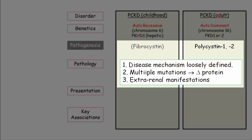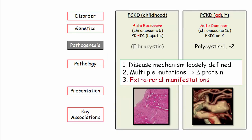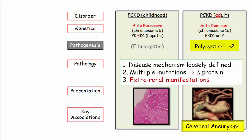There is not one mutation that leads to defective protein production — in fact there are hundreds, which account for varying phenotypic presentations, particularly relevant in the childhood form. It is conceptually important to realize these proteins are found in tissues beyond the kidney. In autosomal recessive disease, abnormalities of fibrocystin give rise to biliary dysgenesis, which may manifest as congenital hepatic fibrosis. In the autosomal dominant form, abnormalities of polycystin impact vascular smooth muscle and manifest as cerebral aneurysms.